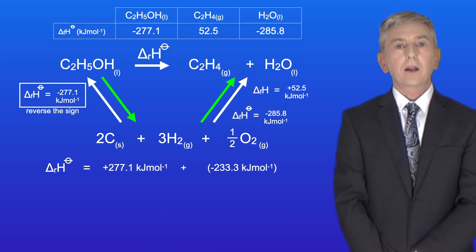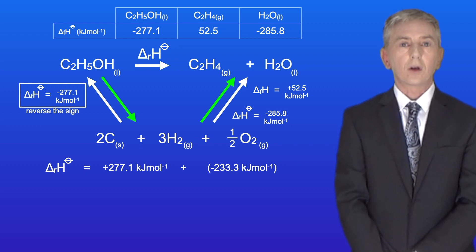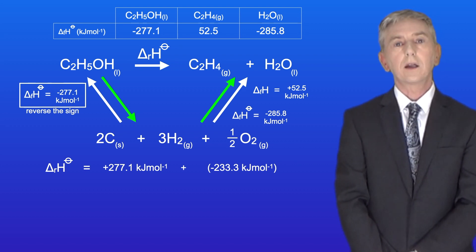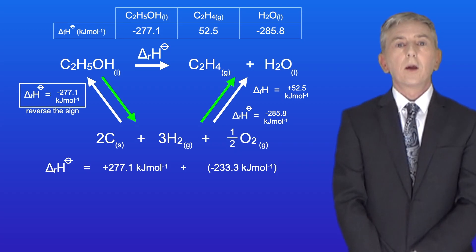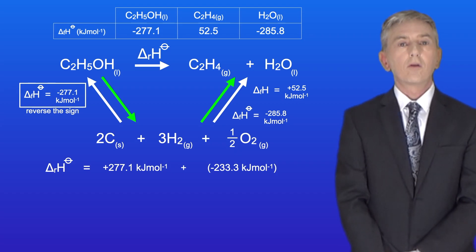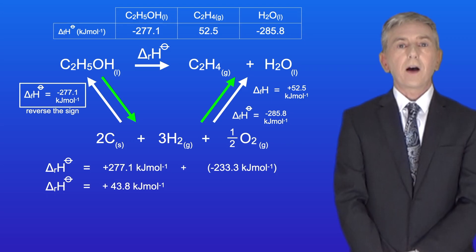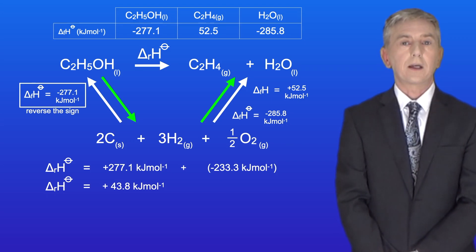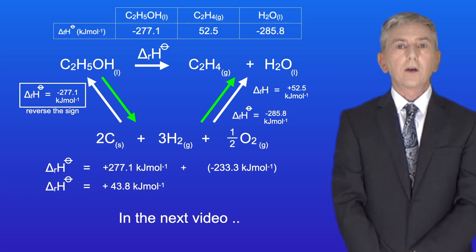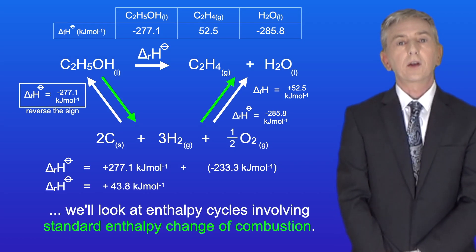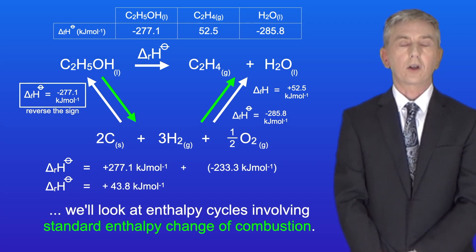Therefore, the standard enthalpy change of reaction will be plus 277.1 kJ per mole, plus minus 233.3 kJ per mole. This gives a final answer of plus 43.8 kJ per mole. In the next video, we look at enthalpy cycles involving standard enthalpy change of combustion.